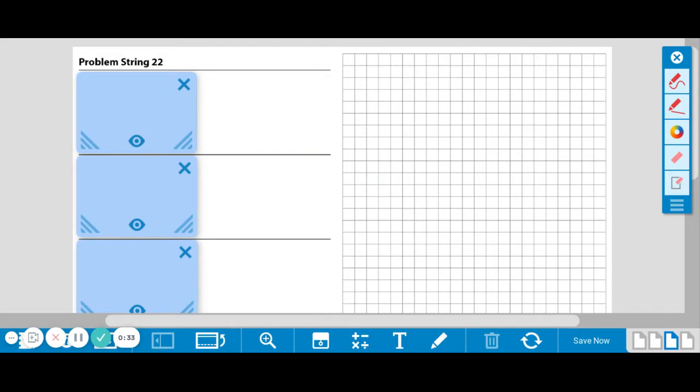The first problem today is 3 fourths minus 2 thirds. Because these are fractions with unlike denominators, they need to be changed into equivalent fractions so that they have the same denominator.